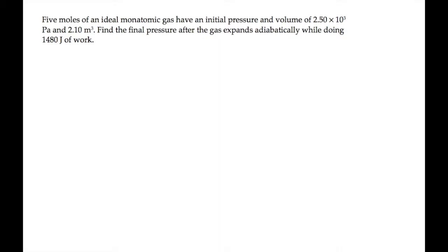This problem gives us an adiabatic process and asks us to calculate the final pressure. For any adiabatic process, PV to the gamma equals a constant, where gamma is the adiabatic constant — the ratio of specific heats. We can also write this as PV to the gamma evaluated at the initial state equals PV to the gamma evaluated at the final state. We'll use both these expressions in solving this problem.